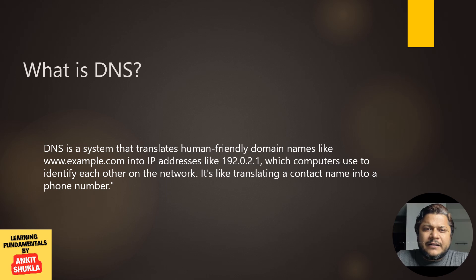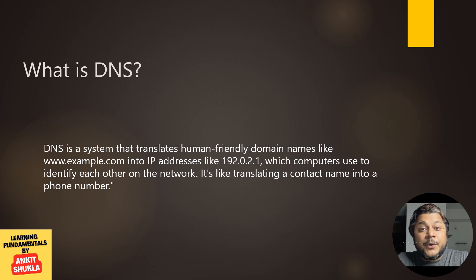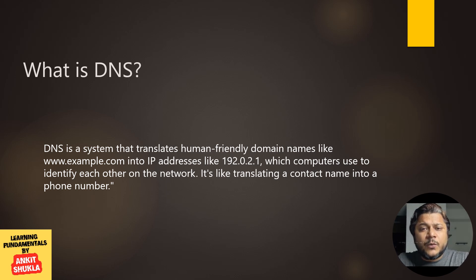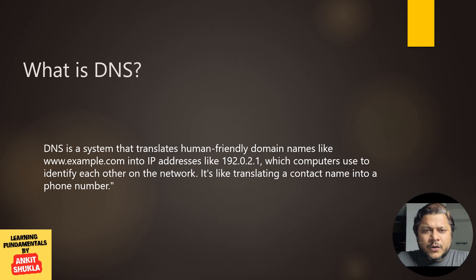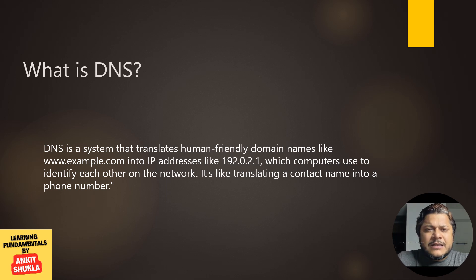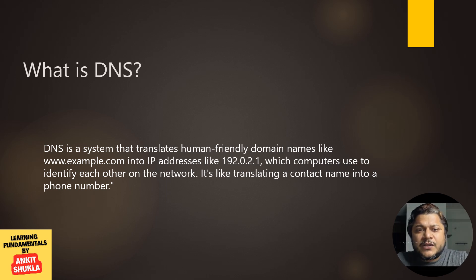DNS is a system that translates human-friendly domain names like example.com into IP addresses, which computers use for identifying each other on the network. It's like translating a contact name into a phone number. Some other examples of DNS are google.com or msn.com. If you want to know the IP address of these sites, just use Command Prompt on your Windows machine and type google.com or msn.com and it will give you the IP address.